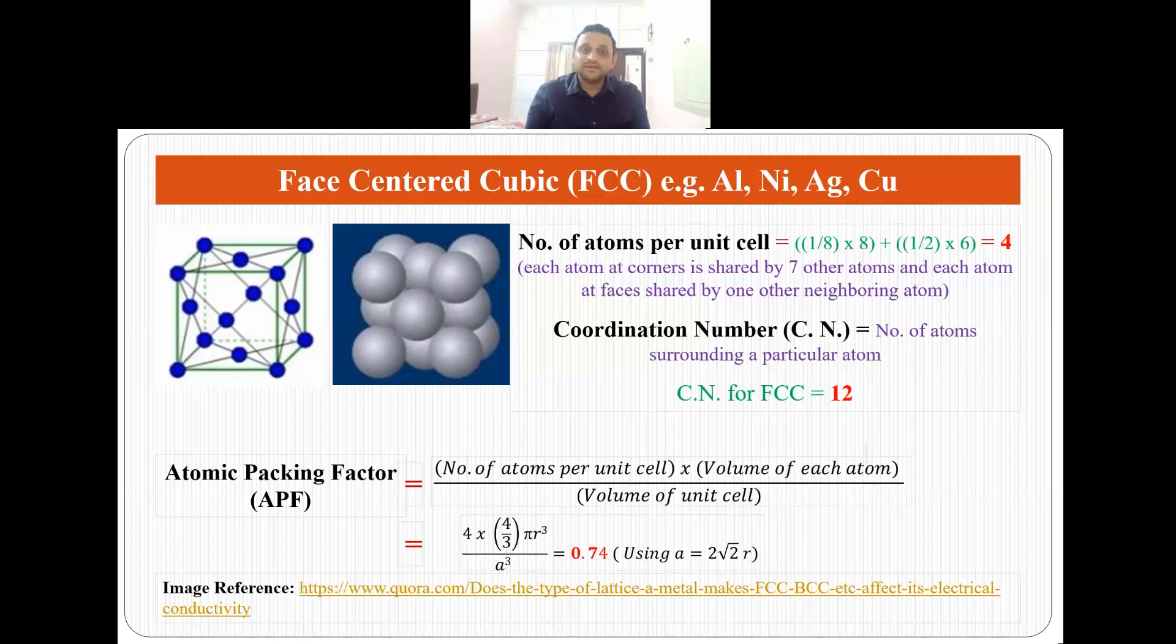It means 74% of the total volume in the FCC system is occupied by atoms. Some of the materials which exhibit face centered cubic structure are aluminum, nickel, silver and copper.